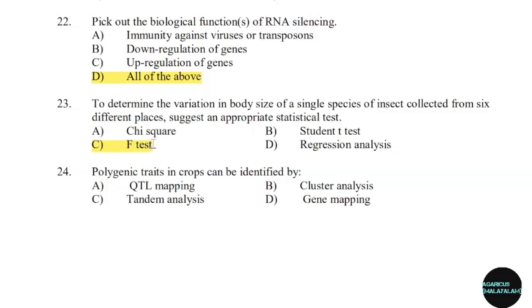24th question: Polygenic traits in crops can be identified by. Correct answer: Option A — QTL mapping.